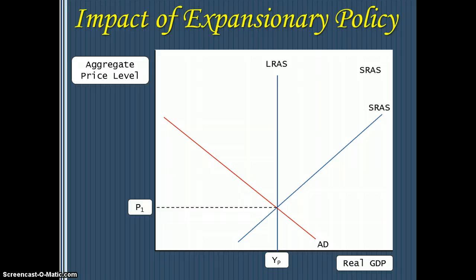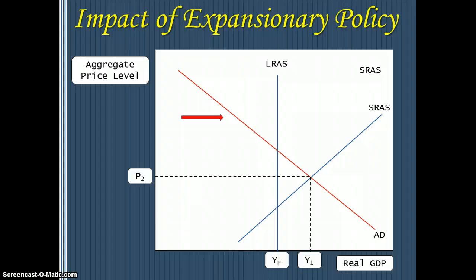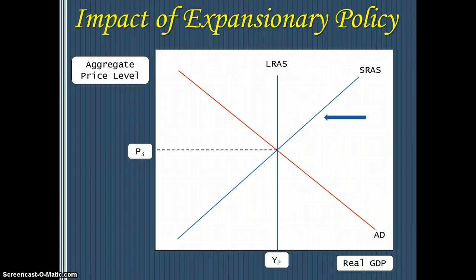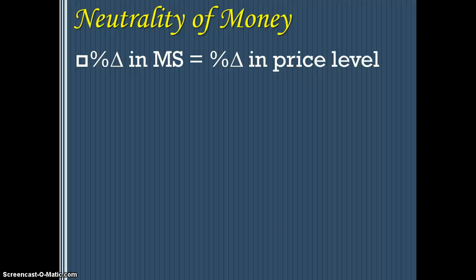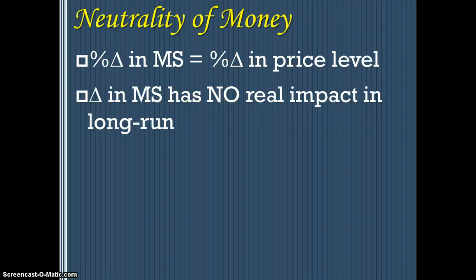We want to look at what we left off with last time, which is the idea of neutrality of money. If we're at long-run equilibrium and the government pursues an expansionary monetary policy, they can shift aggregate demand to the right, leading to a temporary increase in real GDP. But with that increase in GDP comes a rise in prices, which impacts producers — profit per unit drops, and short-run aggregate supply shifts back left to long-run equilibrium at the same potential output but with higher prices. As money supply increases, price levels increase with an equal percentage change.